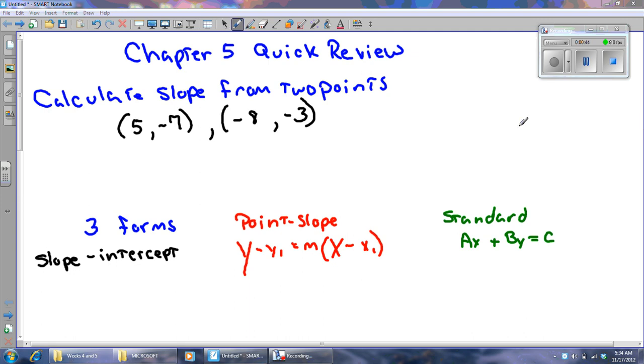All right, first of all, being able to calculate slope from two points, something we haven't done a whole lot of in a while. It's been a little bit embedded when we're doing our writing equations, but it's one of the early things. Remember, I can subtract my y's, negative 7 minus negative 3. Notice there's two minuses.